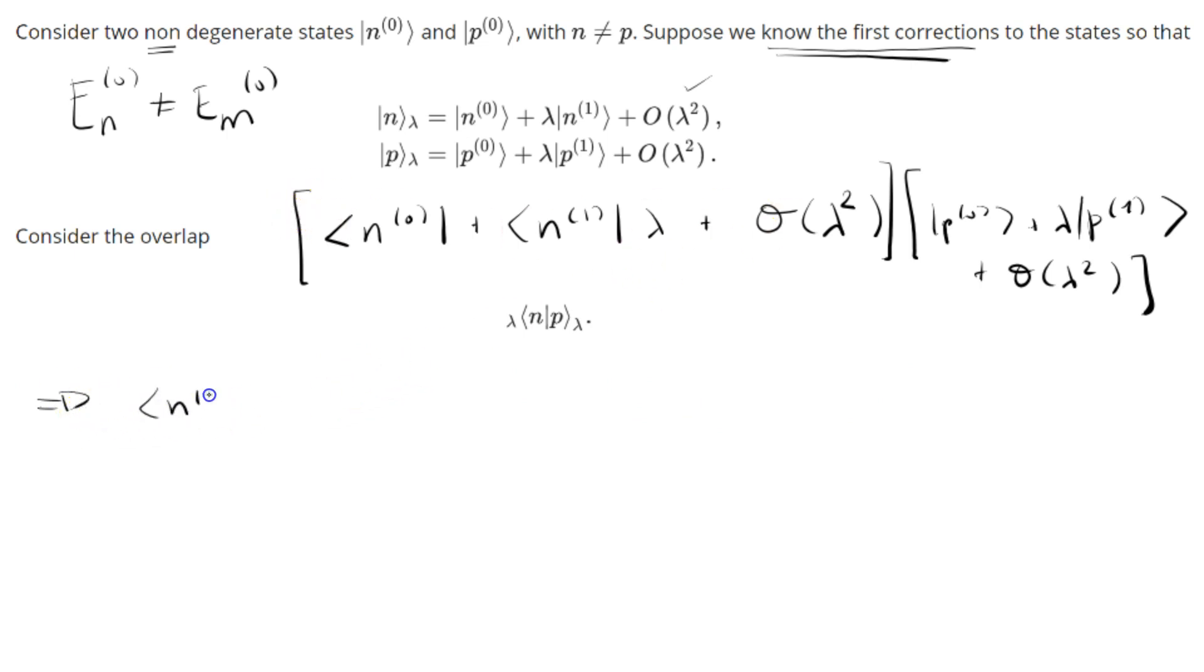First things first, we have N0, P0. And then we have, let's collect orders of lambda now. So then we're going to have, let me do it in a different color just so it looks pretty. Then we have plus lambda times, well, we have N0, P1, right? N0, P1 comes from this. And then N1, P0 comes from that. Plus N1, P0.